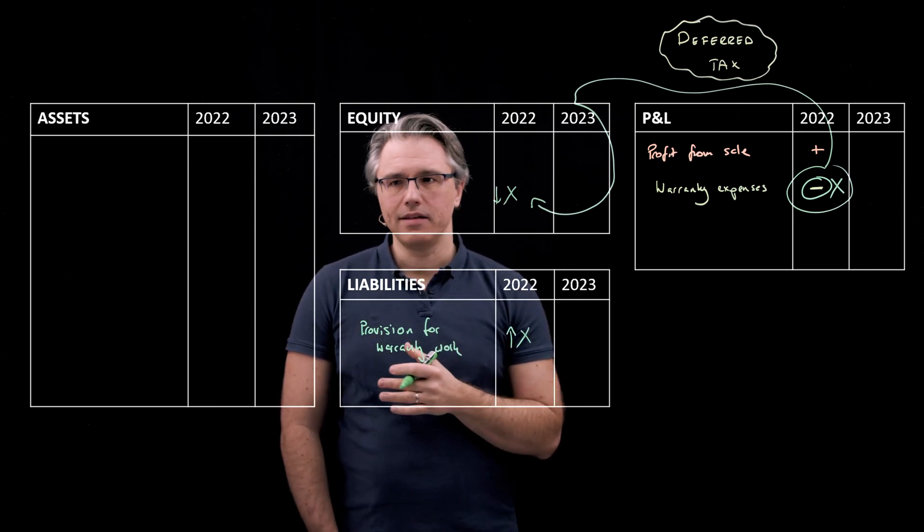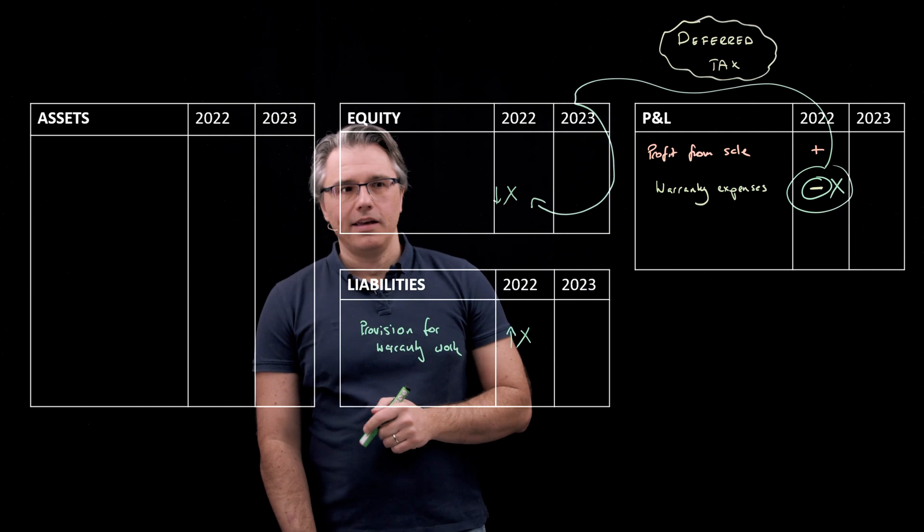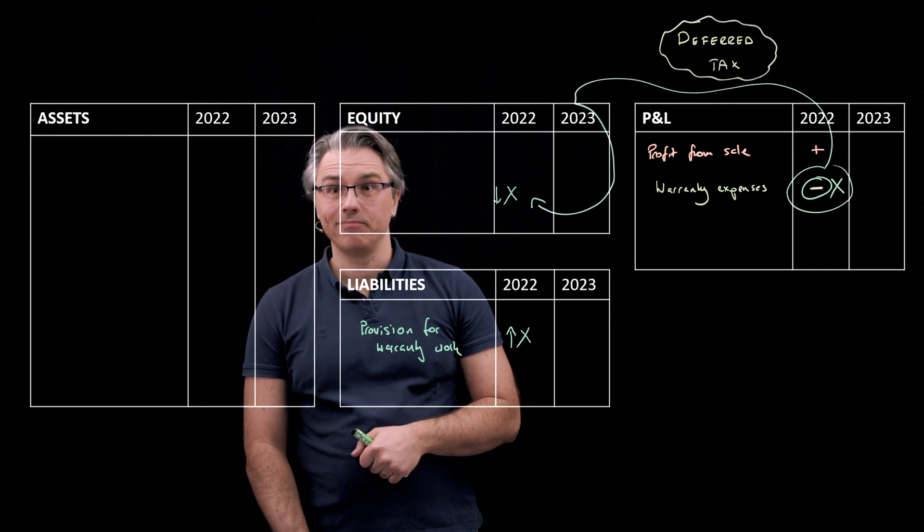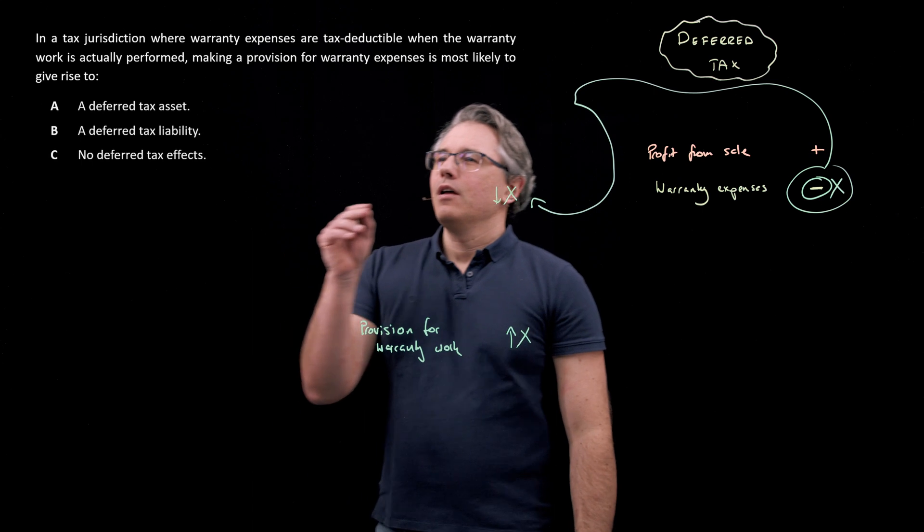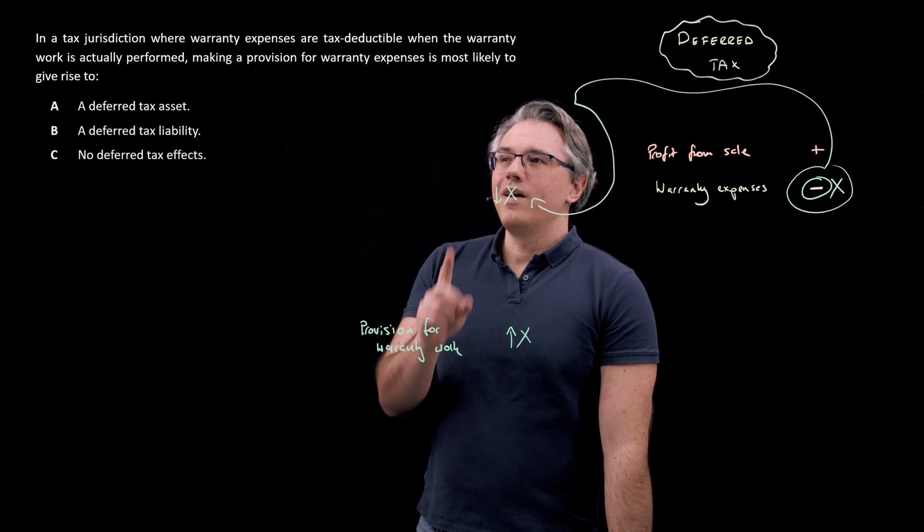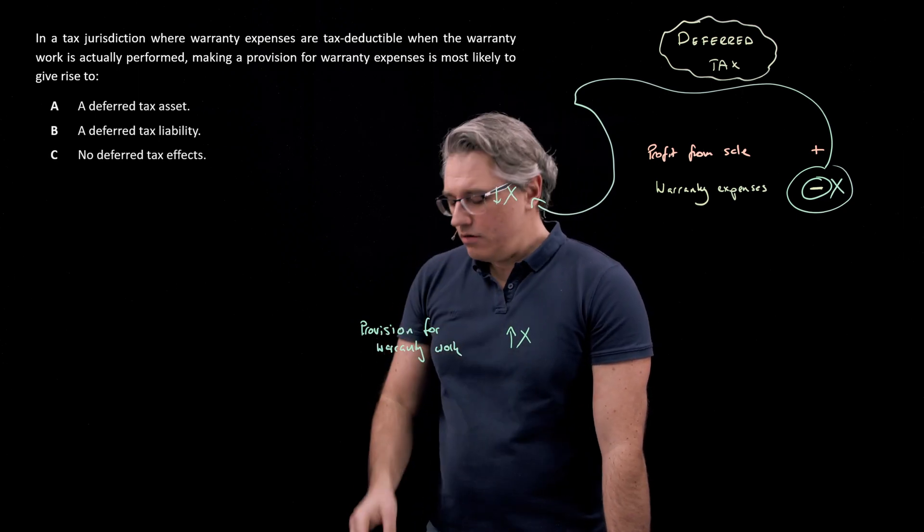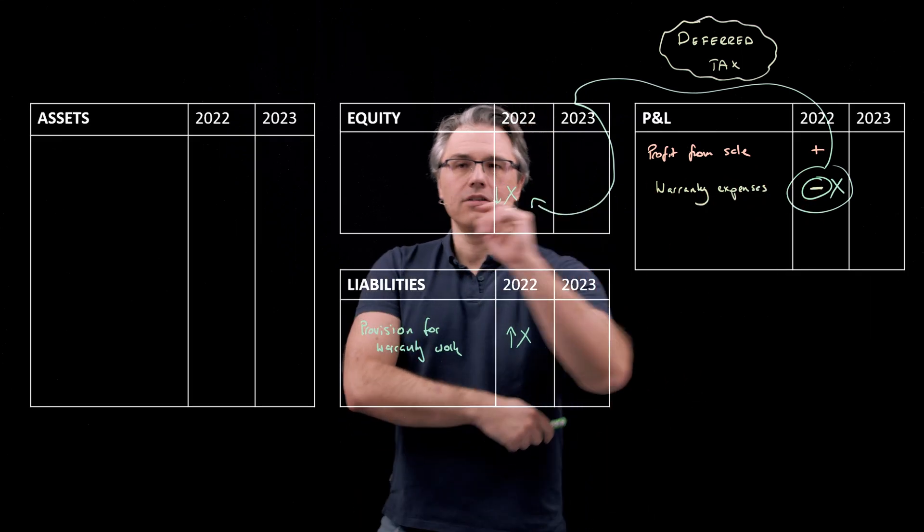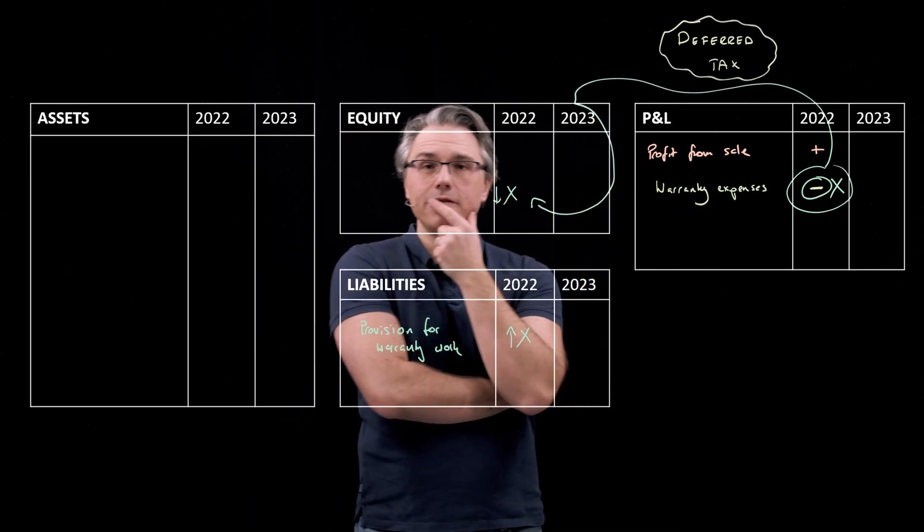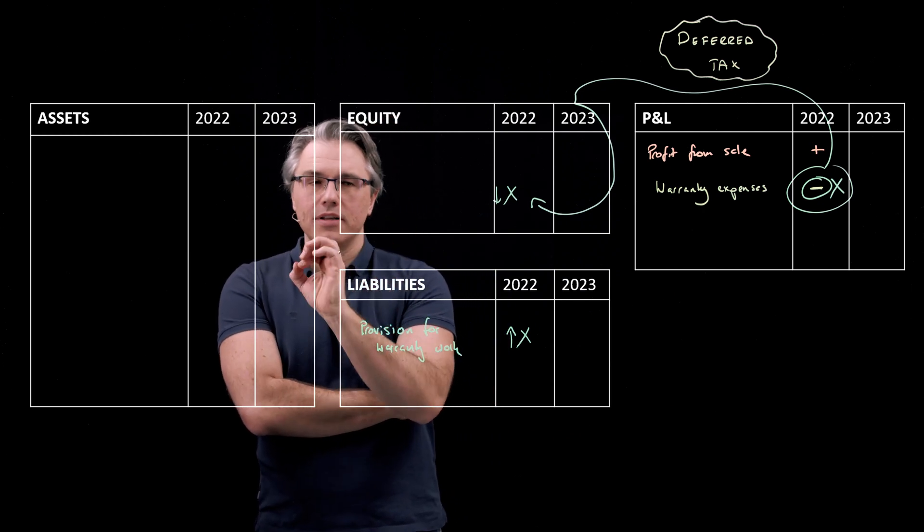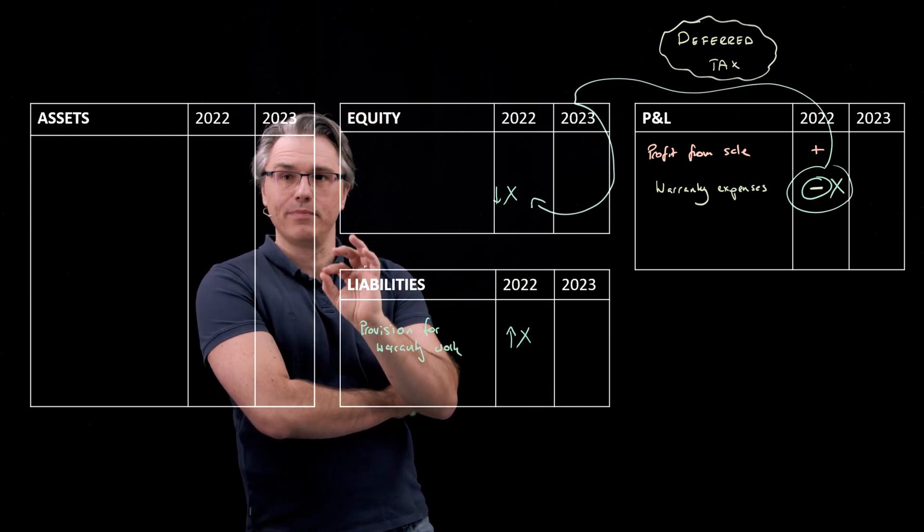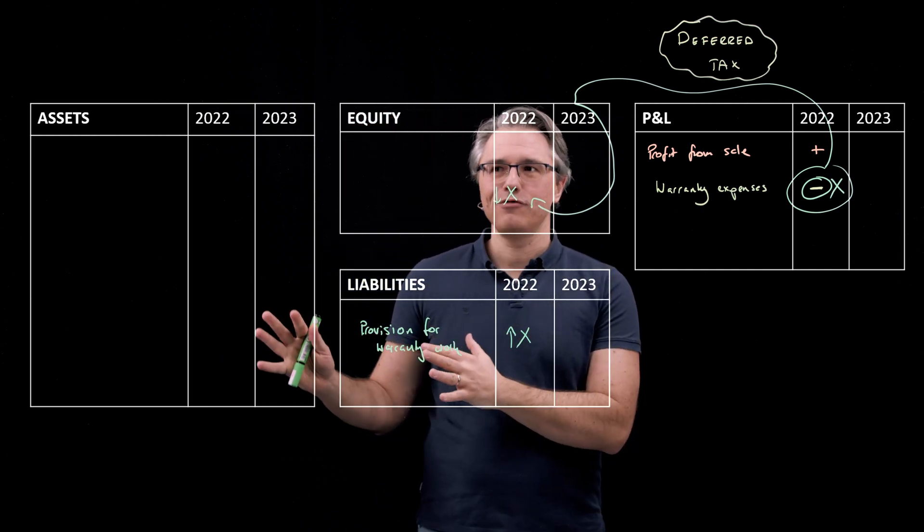However, what the question said, and let me go just for a moment to the question. And I'm not going to clear my board here. So you will for at least a moment see the writing. But I'm back to the question. It says, in a tax jurisdiction where warranty expenses are tax deductible when the warranty work is actually performed, meaning you don't treat this as a tax deductible expense when you recognize the provision, because that's only an estimate of the work you'll have to perform in the future. This becomes a tax deductible expense.